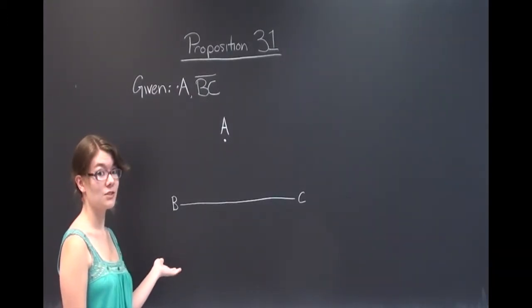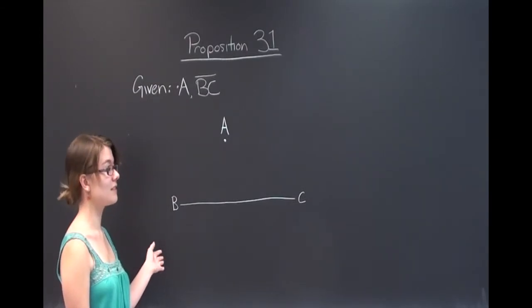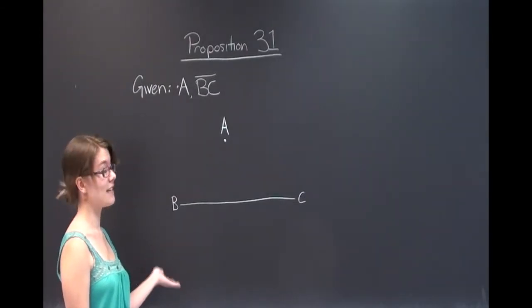To begin we're going to choose a random point along BC. We'll call it D and then connect that to point A.